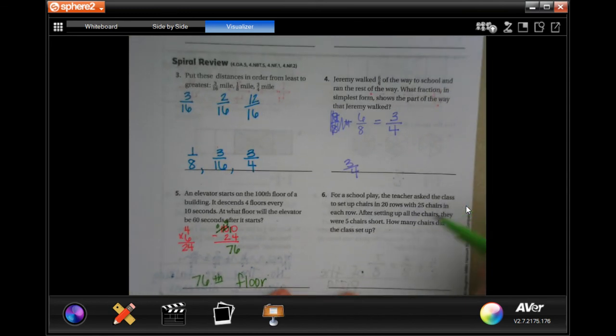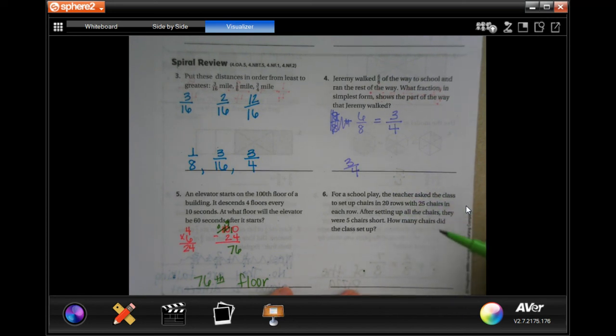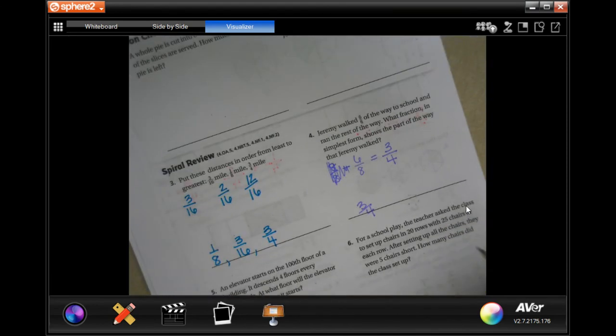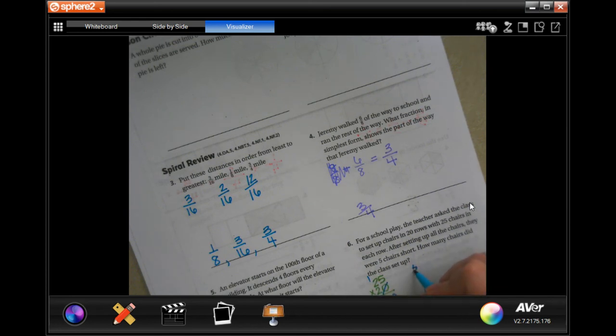The teacher asked the class to set up chairs in 20 rows with 25 chairs in each row. After setting up all the chairs they are five chairs short. How many chairs does the class set up? Well, let's go 25 times 20 first. Do that zero and let's take it off and put it at the end. 2 times 5 is 10, carry the 1. 2 times 2 is 4 plus 1 is 5. So then 500 minus the 5 chairs would be 495.